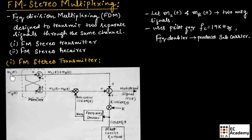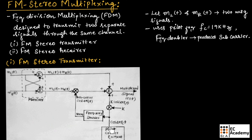Here, the two input message signals are ML(t) and MR(t). These two message signals are passed through a matrixer that produces two outputs: ML(t) plus MR(t), and ML(t) minus MR(t). ML(t) plus MR(t) is given as input to the adder. ML(t) minus MR(t) is multiplied by a subcarrier cos(4π·Fc·t). This subcarrier is produced by a frequency doubler which takes input from the pilot carrier with frequency Fc equal to 19 kilohertz.